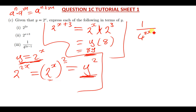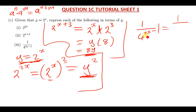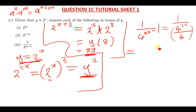Now let's do the last question: 1 over 4 to the power (2x minus 1). This is also simple. We can start by expressing the denominator in terms of x. Remember, when you have a base and the powers are subtracting, it means that at some point there was something dividing. So I can write this as 1 over 4 to the power 2x divided by 4 to the power 1.